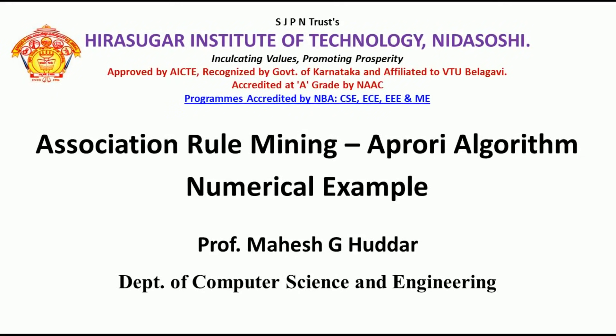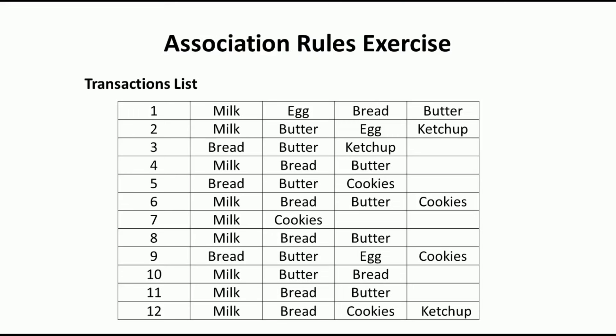In this video I will consider a numerical example to understand the Apriori algorithm — it is the association rule mining algorithm. Here 12 transaction lists are given, in each transaction different products were sold like milk, egg, bread, butter, and so on.